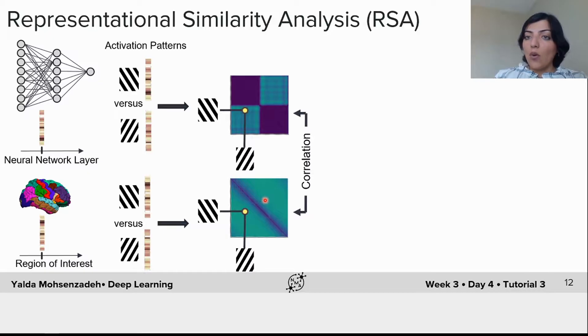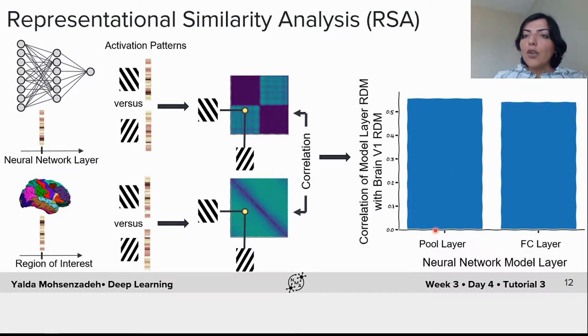Now that the data is mapped to a common space of RDM, it's easy to compare them by simply computing their correlation. Here you can see the correlation coefficient for comparing a model pooling layer RDM with V1 brain RDM and a model fully connected layer RDM with brain V1 RDM. As you would expect, the correlation is higher for pooling layer compared to fully connected layer.